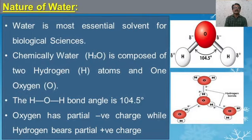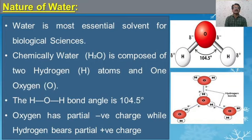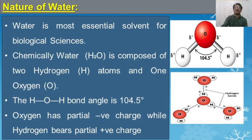When you see the nature of water, it is an essential solvent for biological sciences, and chemically it is composed of two molecules of hydrogen and one molecule of oxygen, that is H2O. This H2O bond angle is usually 104.5 degrees. The oxygen has a partial negative charge while the hydrogen has a partial positive charge, which is why it is considered a polar molecule.